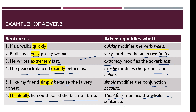So in these examples we saw: in the first sentence, 'quickly' qualifies the verb 'walk.' In the second, 'very' modifies the adjective 'pretty.' In the third, 'extremely' modifies the adverb 'fast.' In the fourth, 'exactly' modifies the preposition 'before.' In the fifth, 'simply' modifies the conjunction 'because.' And in the sixth, 'thankfully' modifies the whole sentence. Notice that an adverb does not qualify a noun or pronoun — that is the job of an adjective.